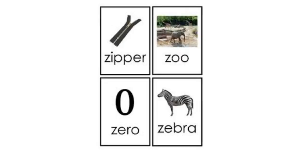Okay everybody, let's go over these words that begin with the letter Z. I'm sure you know all these words so let's name them quickly. Zipper. Zoo. Zero. Zebra. Can you think of other words that begin with Z? Good job everybody.